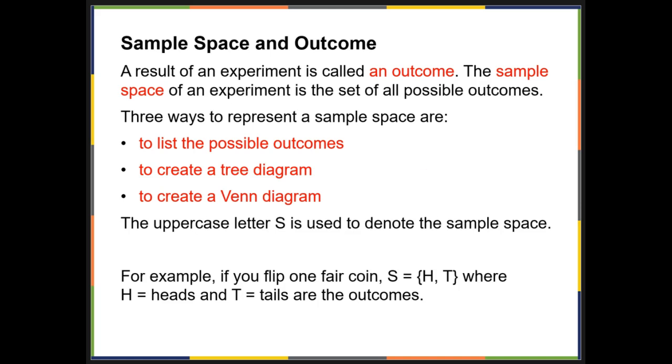The result of an experiment is called an outcome, and the sample space is the set of all possible outcomes. We have three ways that we are going to represent a sample space.